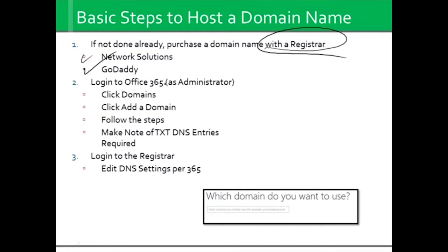We then log on to Office 365 with that initial administrative account. So if I picked mayfieldcorner.onmicrosoft.com, it asks for an initial username — I usually pick admin, so it might be admin at mayfieldcorner.onmicrosoft.com. That's going to be my administrator account. Once you log on as administrator, you go to domains and click on add a domain. It literally details out step by step what it needs. What I really like about it is when it looks up the domain, if you already own it, it'll figure out where it's registered and give you directions specific to that registrar.